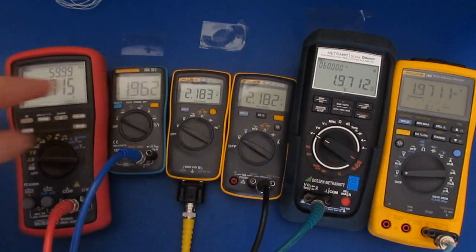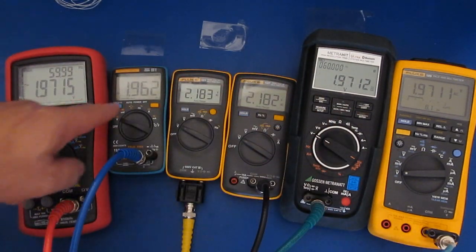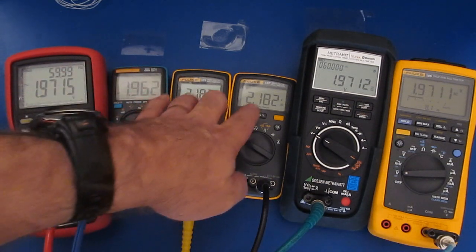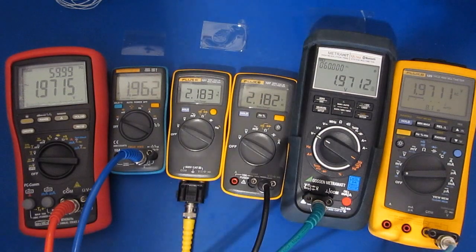You can see the RMS meters are all reading basically 1.97. The ZT-102 is just a little low and the two averaging meters are slightly high.